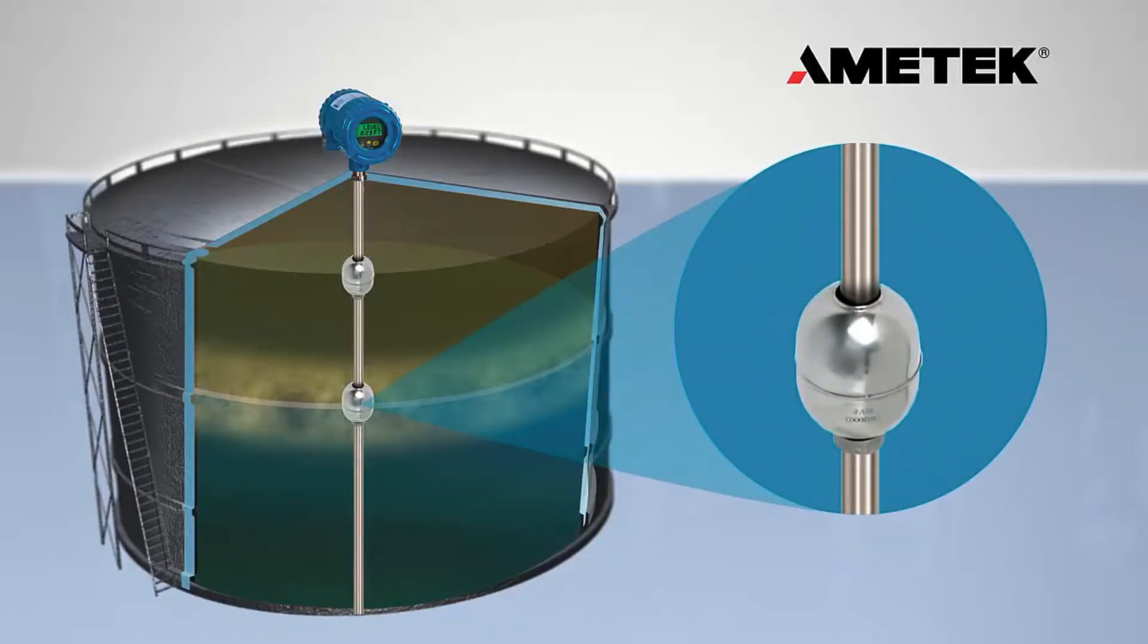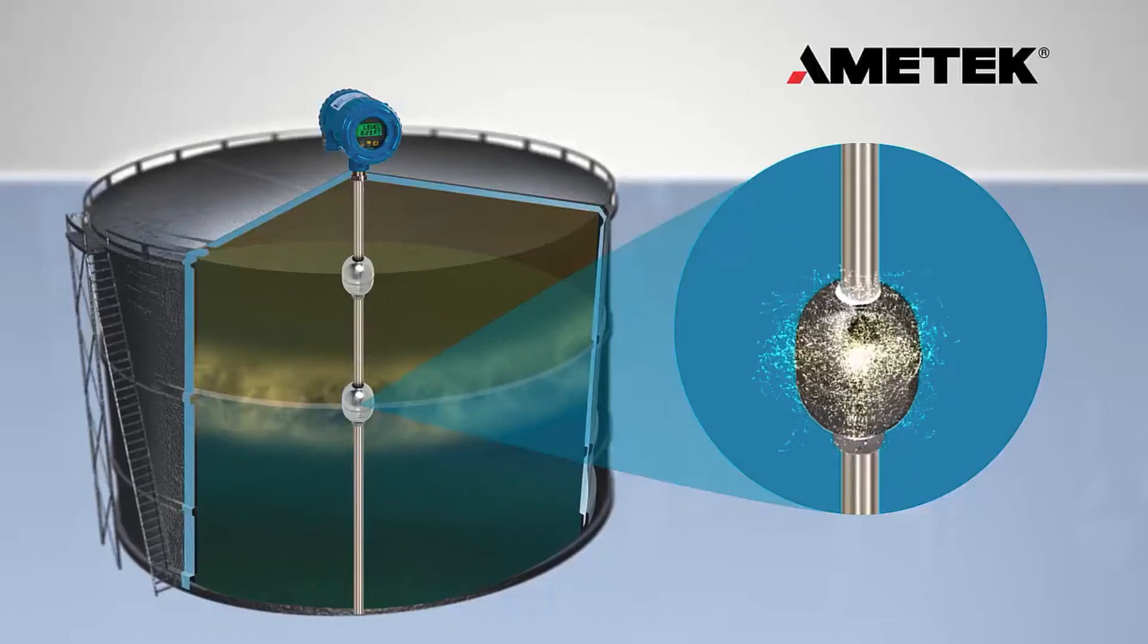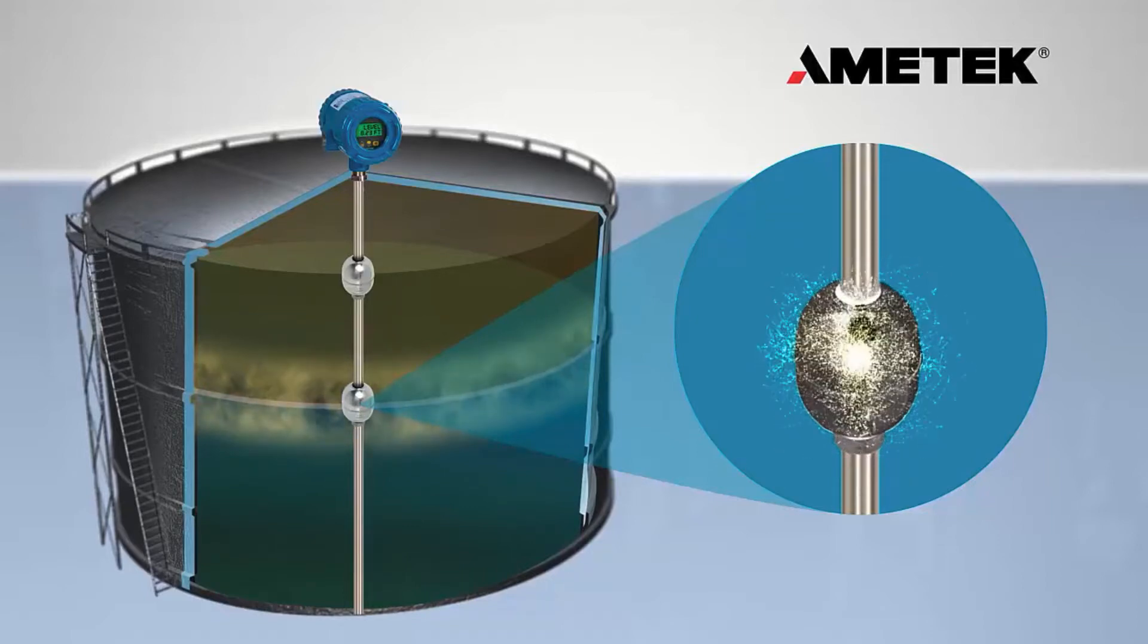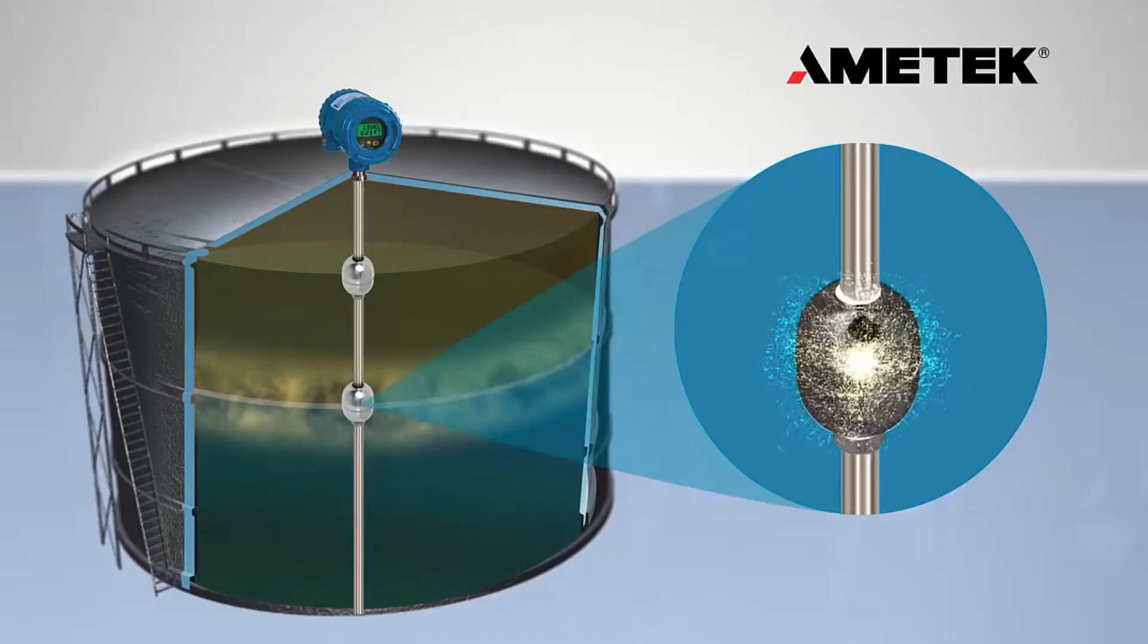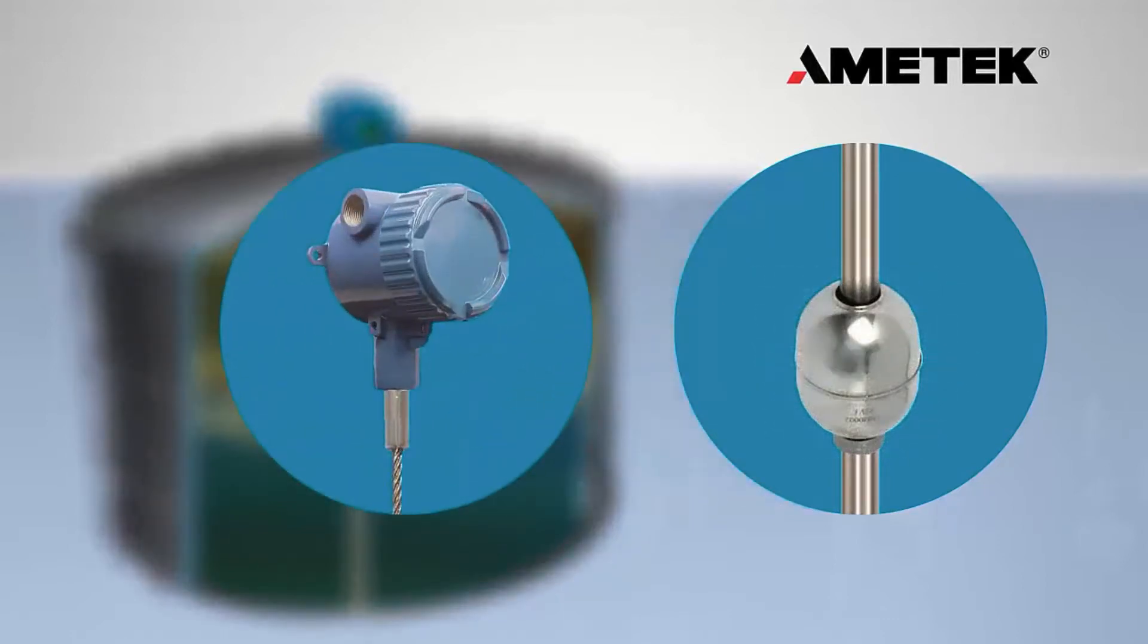Magnets are positioned on the probe based on their specific gravity match to the liquids being measured. This ensures that the float will always maintain its position, both on the top liquid level and at the interface position. The lower measurement signal remains unaffected by the formation of an emulsion.